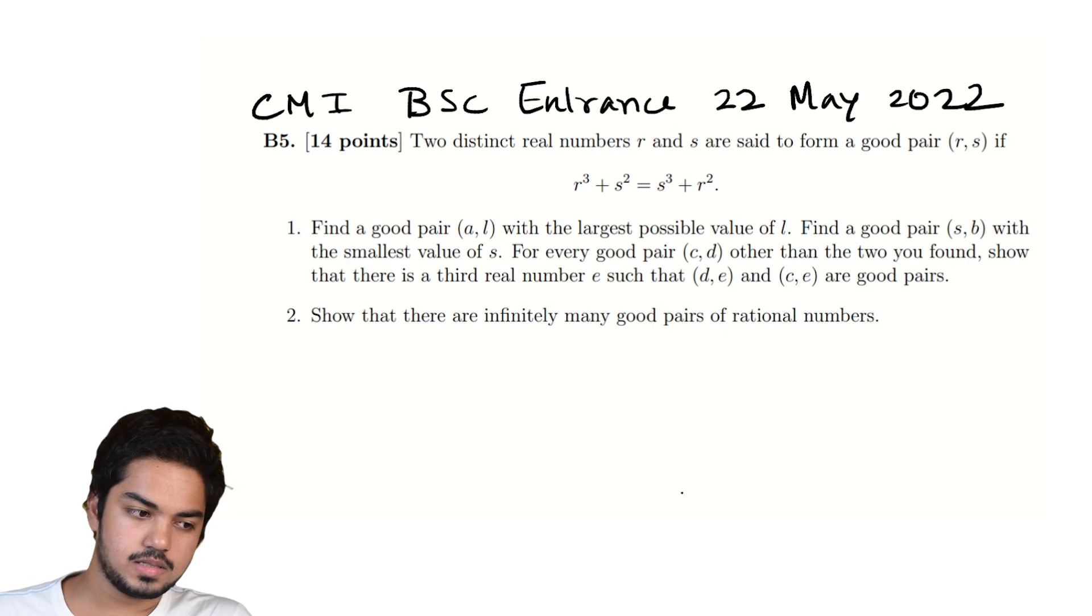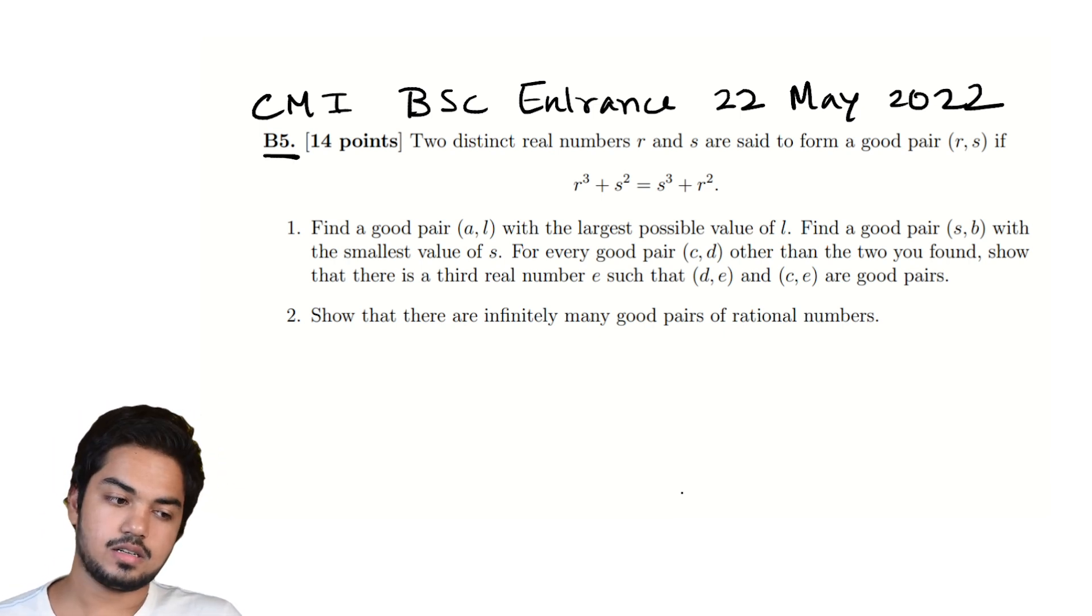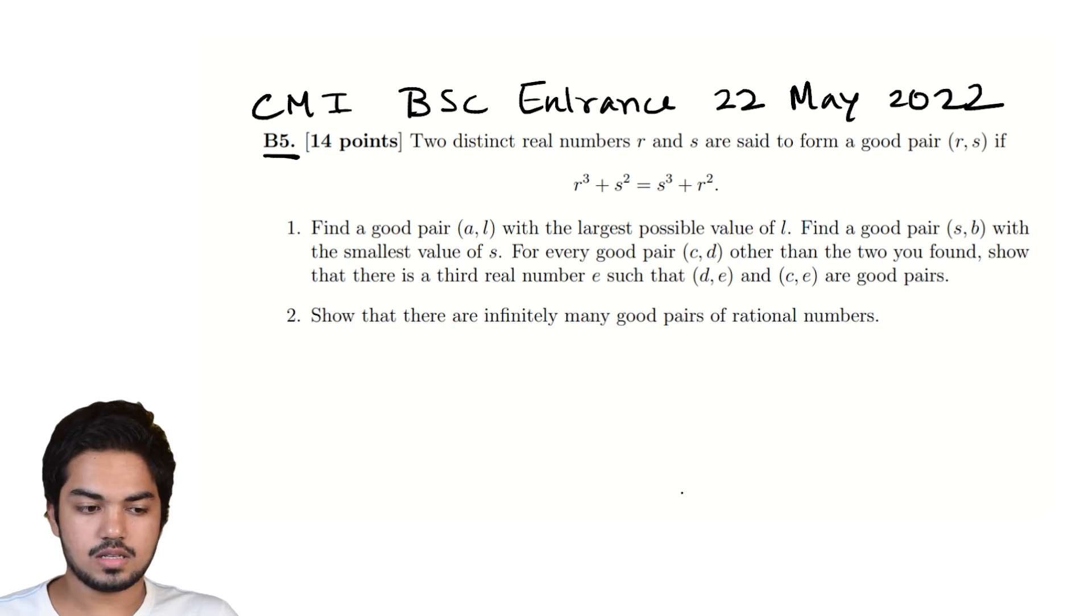The problem is B5, the fifth subjective problem, and what the question says is that two distinct real numbers r and s are said to form a good pair (r, s) if r³ + s² = s³ + r².